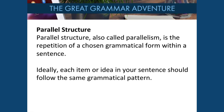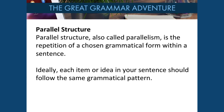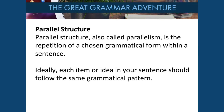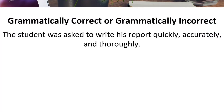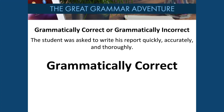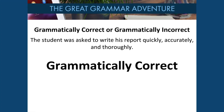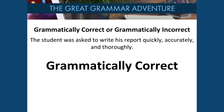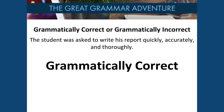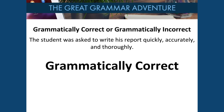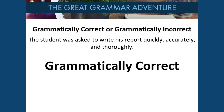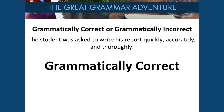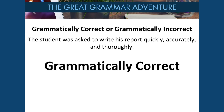Parallel structure is extremely important — it's a repetition of a chosen grammatical form within a sentence. Each item or idea in your sentence should follow the same grammatical pattern. For example: the student was asked to write his report quickly, accurately, and thoroughly. You can test parallel structure by saying each part separately: quickly, accurately, thoroughly — each works on its own, which confirms parallel structure.